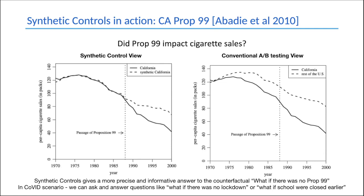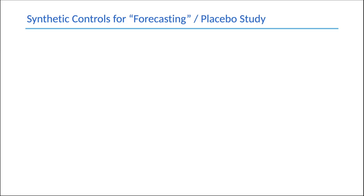In the case of COVID, we can ask and answer questions like: what if there was no lockdown, or what if schools were closed earlier, and all sorts of interventions. One might ask: can't you fit any curve to any data — is the synthetic California fit just overfitting? The way to answer that is to do the same kind of synthetic model for placebos. You take other states, like Colorado, and build a synthetic Colorado from data of the other 48 states, excluding California because California has the intervention.